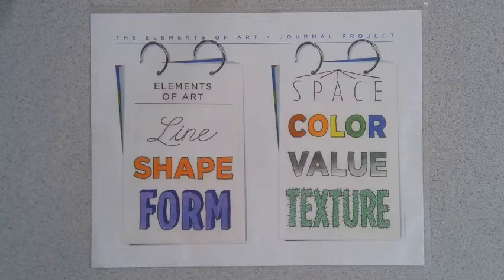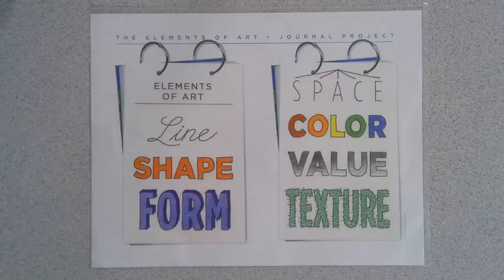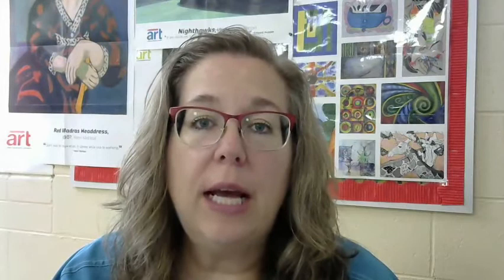For this project today, we're going to focus mainly on line, shape, and color. Our project today, we are going to do a piece in the style of Juan Miro, and he was a Spanish painter who developed a whimsical style of art back in the 1930s.